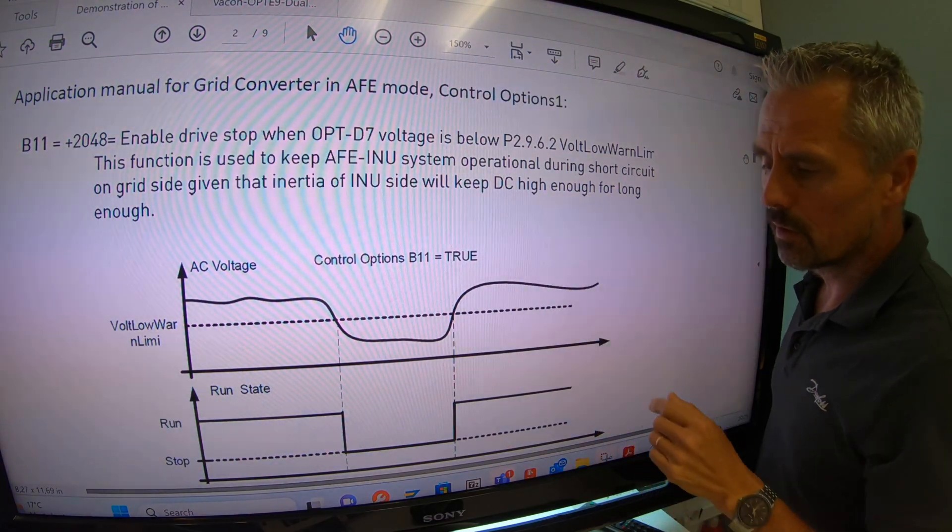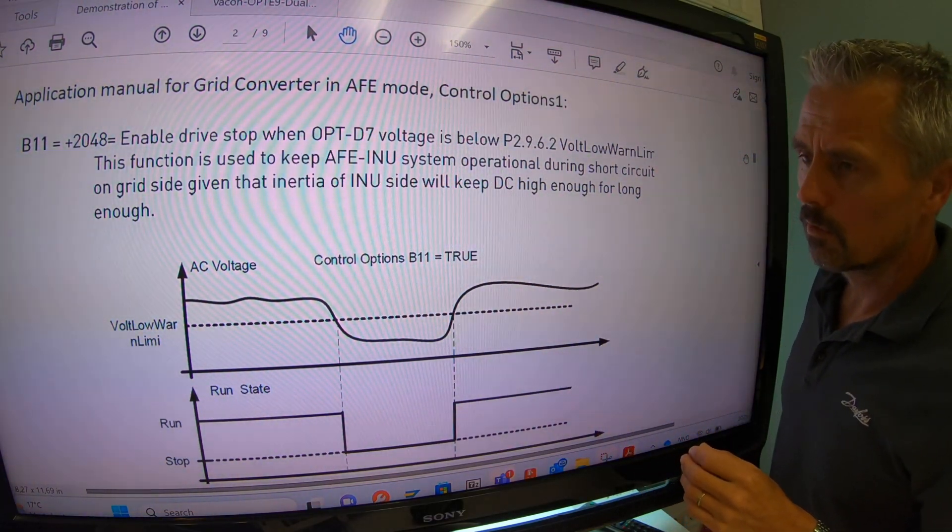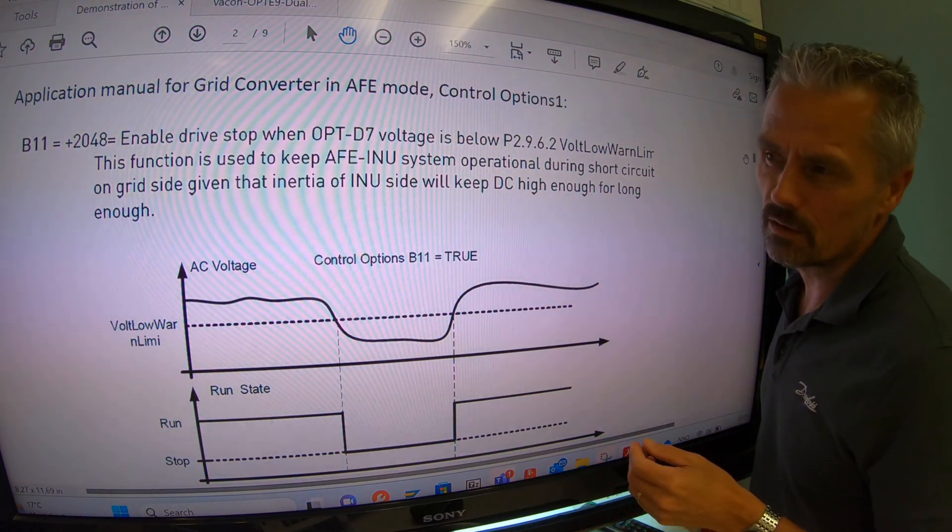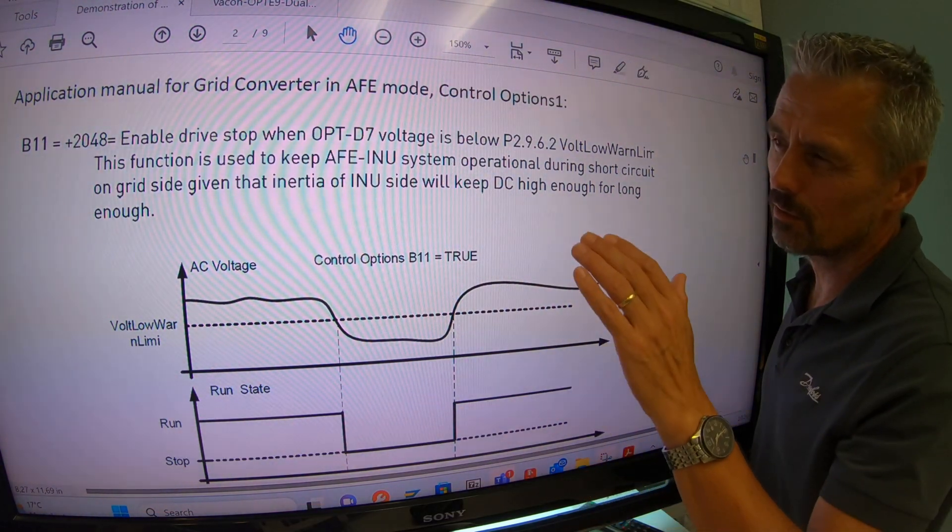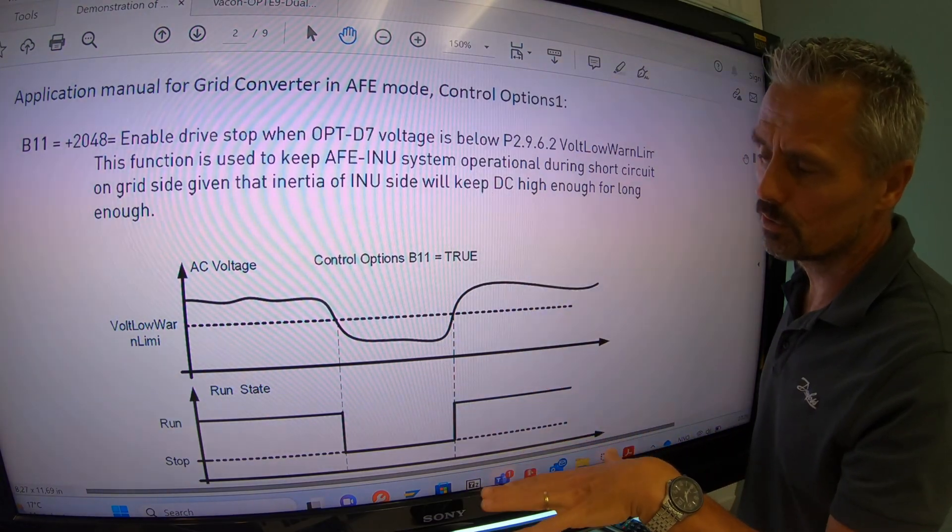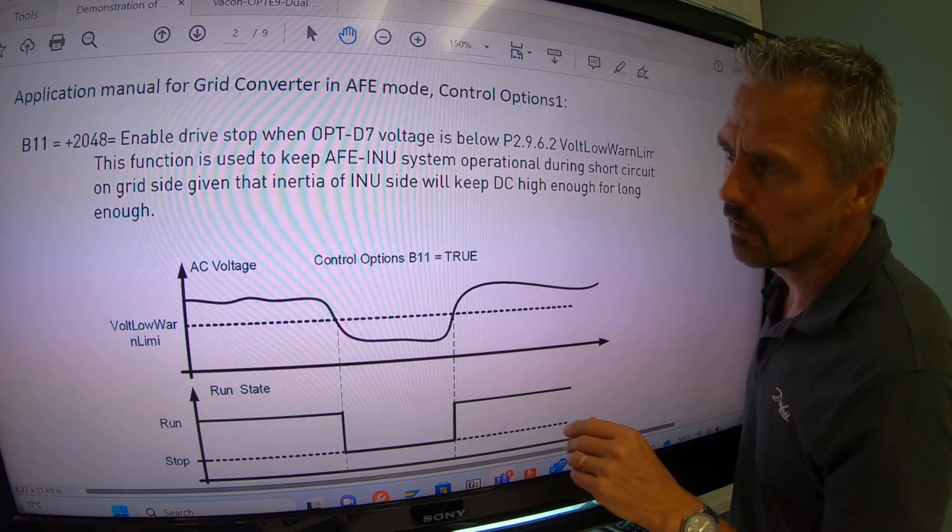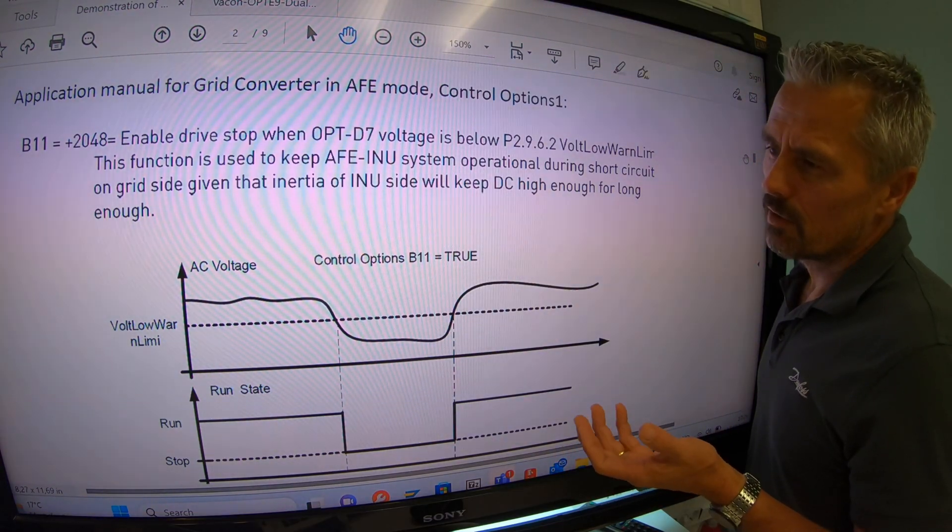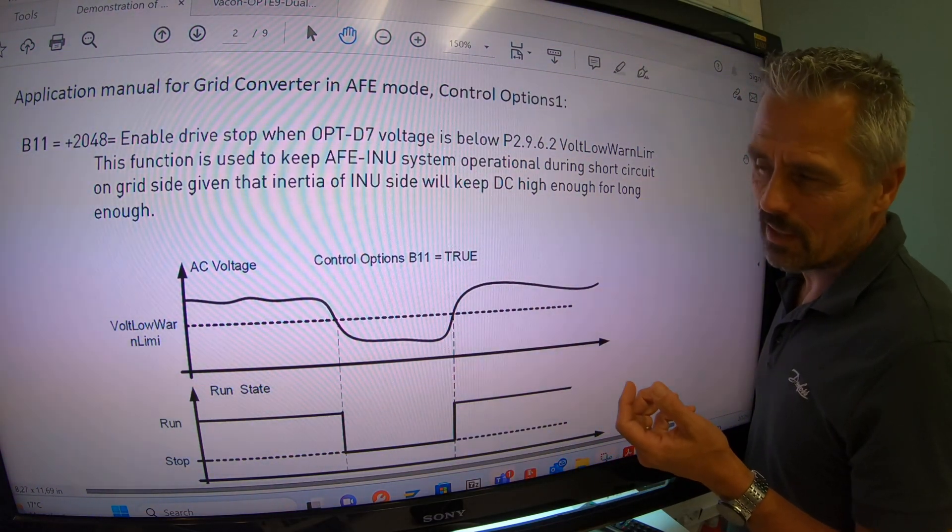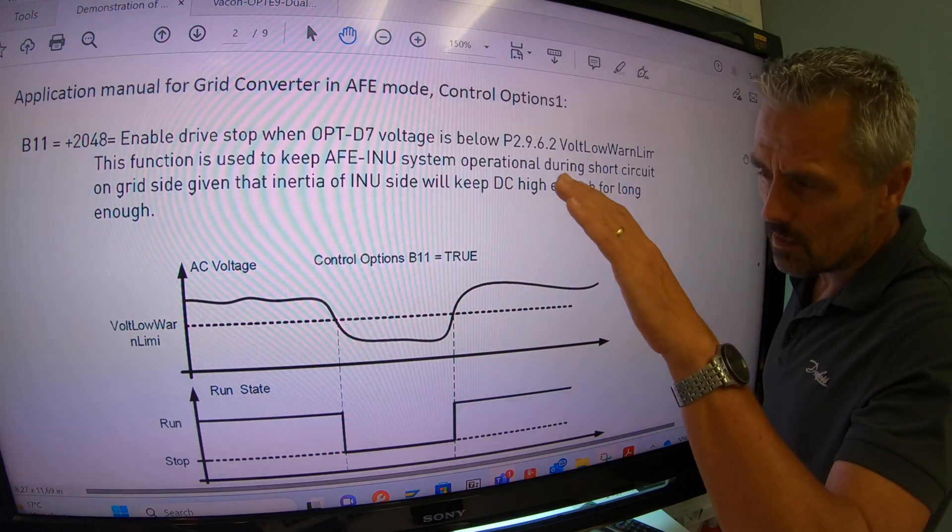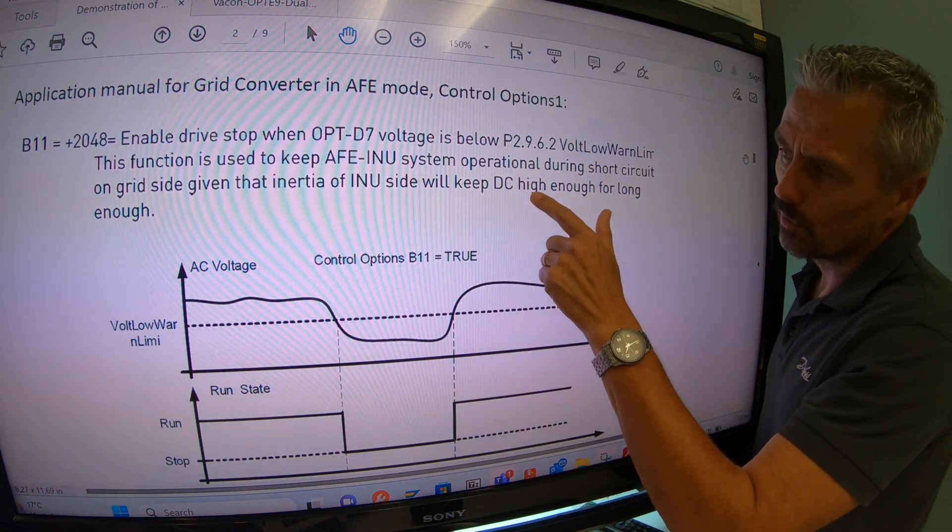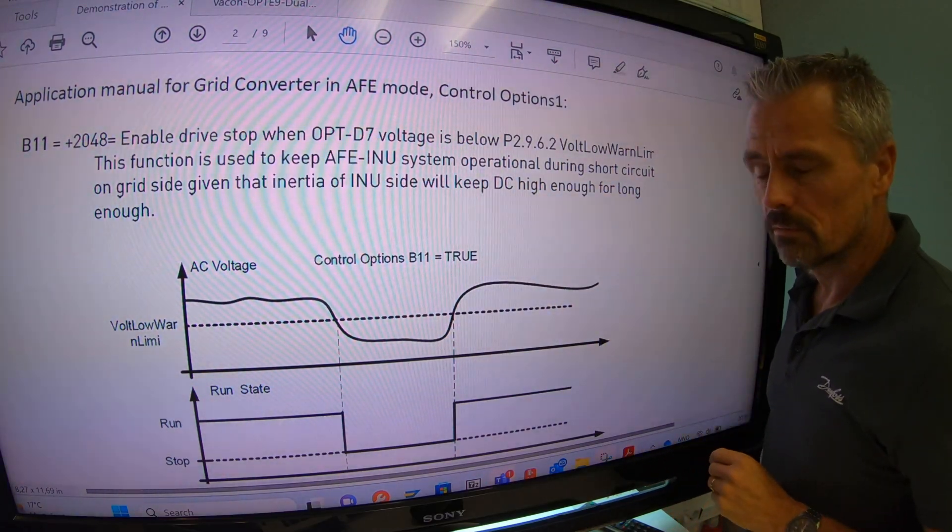It needs to be above the under-voltage trip level. For a 500 volt drive, which usually have a nominal of 675 volt, that means that you can go from 675 down to 480 something. And for a 690 volt AC drive, which have a DC voltage of about 1000 volt, then the DC voltage cannot go lower than about 600 volt. Because otherwise it will just game over.